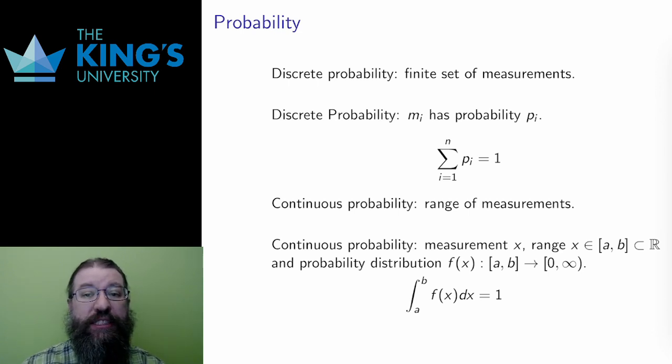The first is discrete probability. This is a situation where there are only finitely many measurements. For flipping a coin, there are only two outcomes. For rolling a six-sided die, there are six outcomes. There are a set number of outcomes, and each can be assigned a probability.